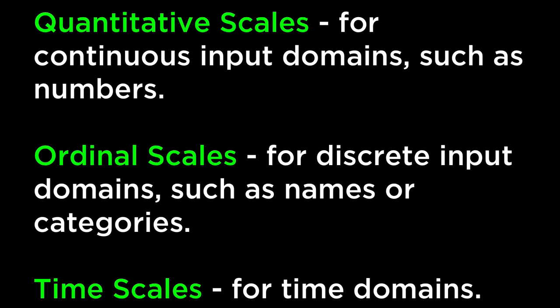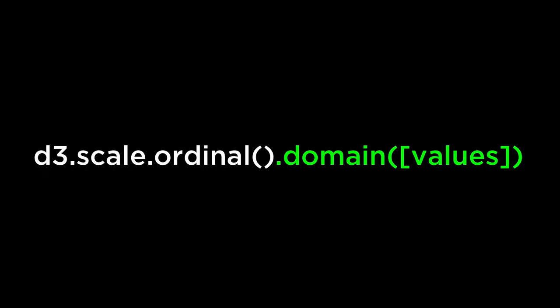D3 Ordinal Scales. D3 provides three types of functions that map an input domain to an output range. Ordinal scales have a discrete domain, such as a set of names or categories — an example can be the letters of the alphabet. D3.scale.ordinal constructs a new ordinal scale with an empty domain and an empty range. The ordinal scale is invalid until an output range is specified; until then, it will always return undefined. The values passed into the domain are a discrete domain.